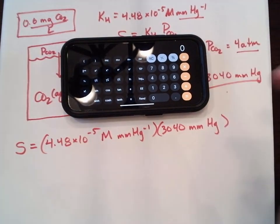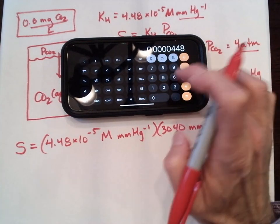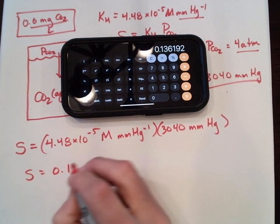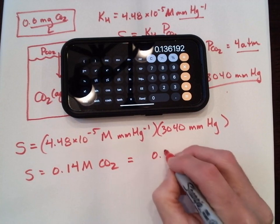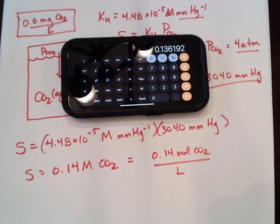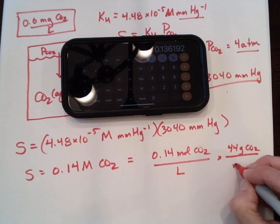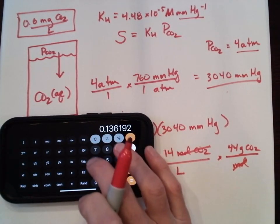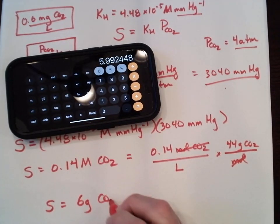Let's do the arithmetic: 4.48 times 10 to the negative 5th times 3,040 gives approximately 0.14 molar CO₂ — meaning 0.14 moles of carbon dioxide per liter. And if you want to know how many grams per liter, multiply by 44 grams of CO₂ per mole. So 0.14 times 44 is about 6 grams — 6 grams of carbon dioxide per liter.